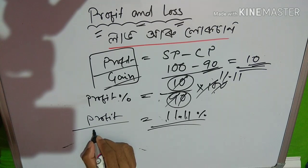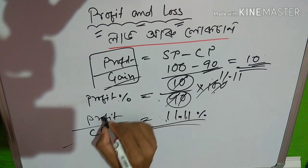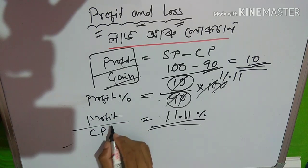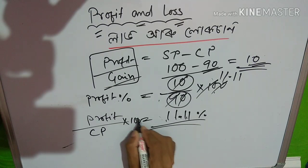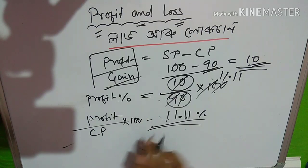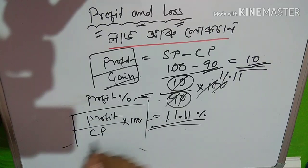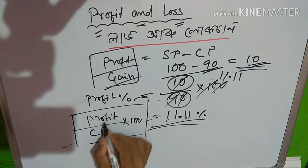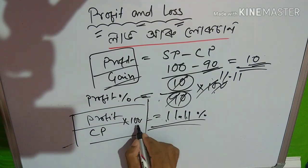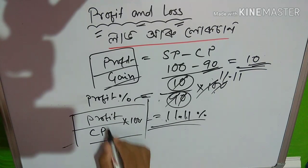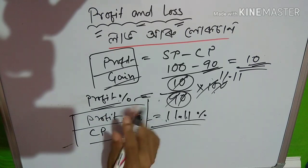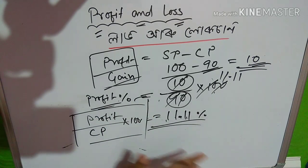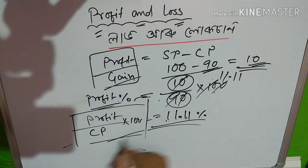A formula we find: Profit divided by CP into 100. Profit percentage equals gain percentage. If we find a greater reward rate then the profit percentage is higher.